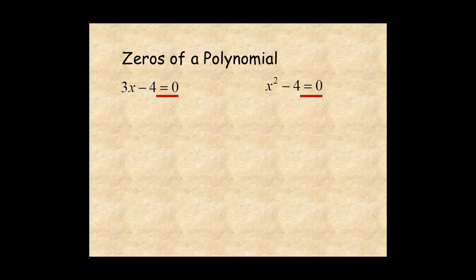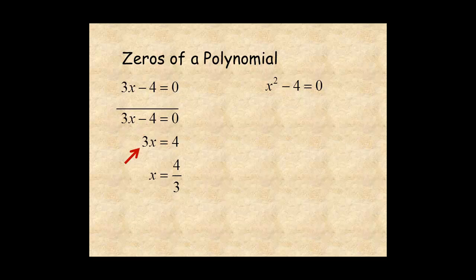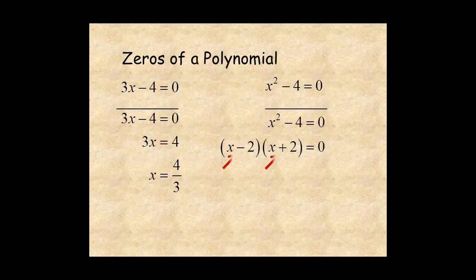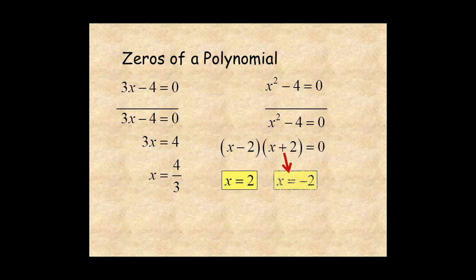For the first example, add 4 and divide by 3 for a zero at 4 thirds. For the second example, factor the polynomial and use the factors to find zeros at x equal 2 and x equal negative 2.